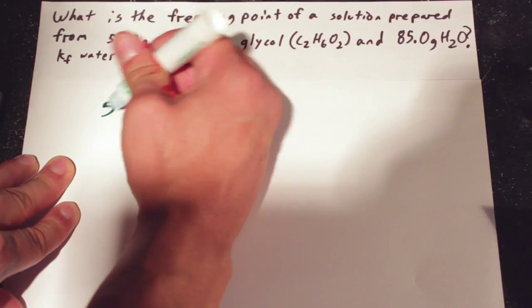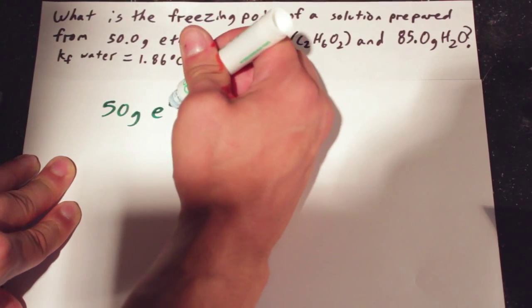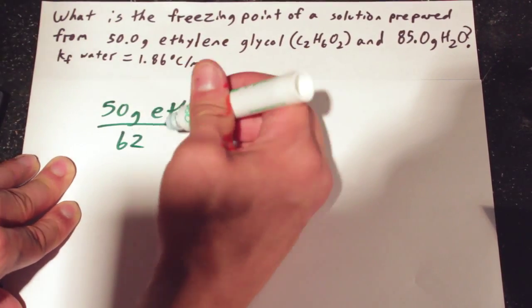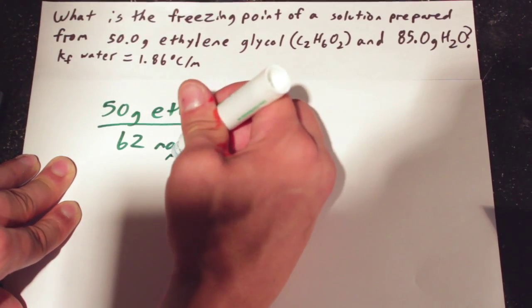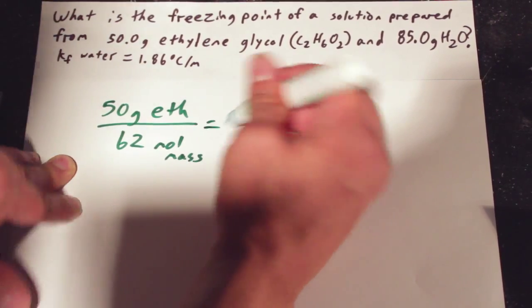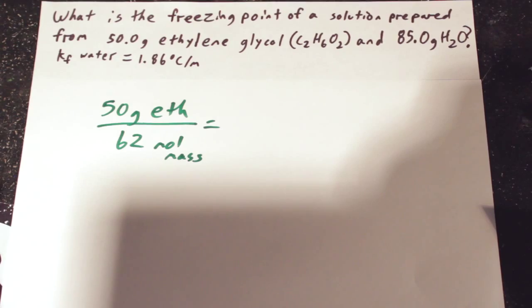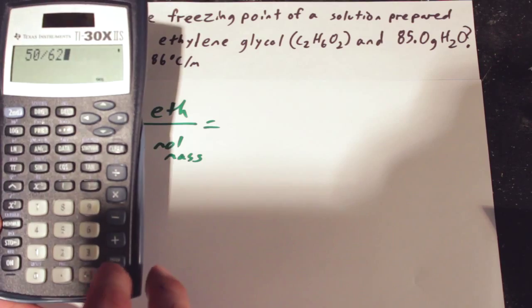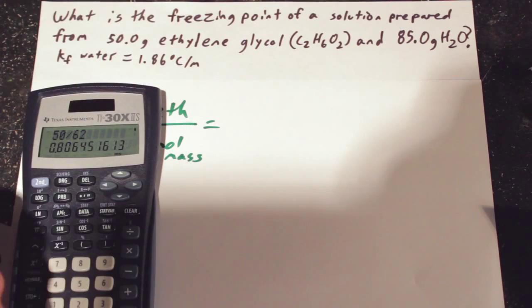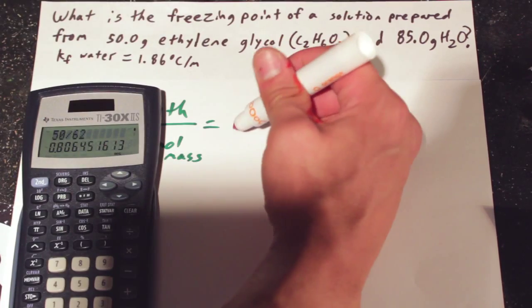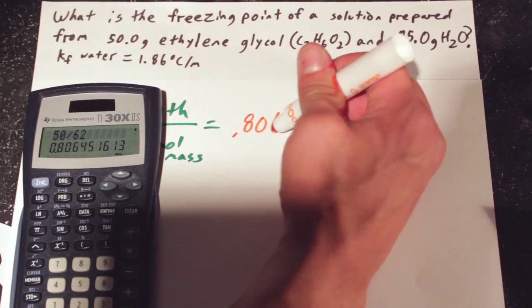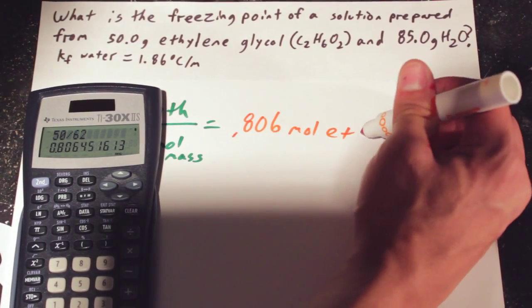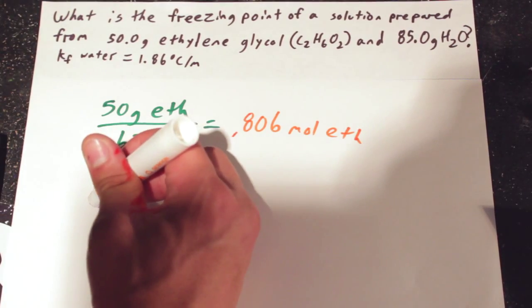Alright, so first we're given 50 grams of ethylene glycol. And we're going to have to convert this to moles by putting it over 62, which is its molar mass on the periodic table. And we're going to do 50 divided by 62. And that's going to give us an answer of 0.806 moles of ethylene glycol.